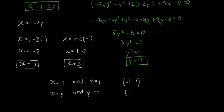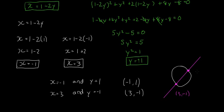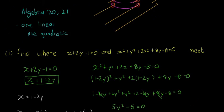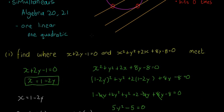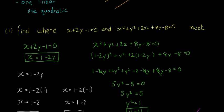So the two points are (−1, 1) and (3, −1). These are the two coordinate points where the circle and the line meet. To summarise: to find where lines and circles intersect, use simultaneous equations — one linear and one quadratic — similar to Algebra 20 and 21. Rearrange the line for x, substitute into the circle equation, solve for y, then substitute back to find x.